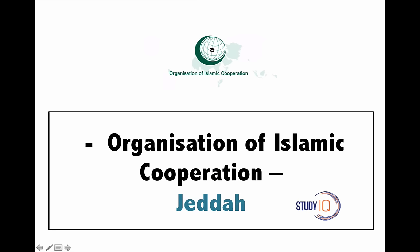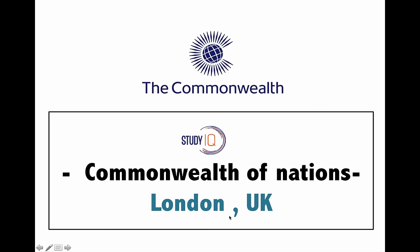Next is the Organization of Islamic Cooperation — a group of predominantly Islamic countries. Their headquarter is in Jeddah in the Middle East. Next is the Commonwealth, which also organizes the Commonwealth Games. It is a large organization with countries like India, South Africa, etc., and its headquarter is in London, United Kingdom.